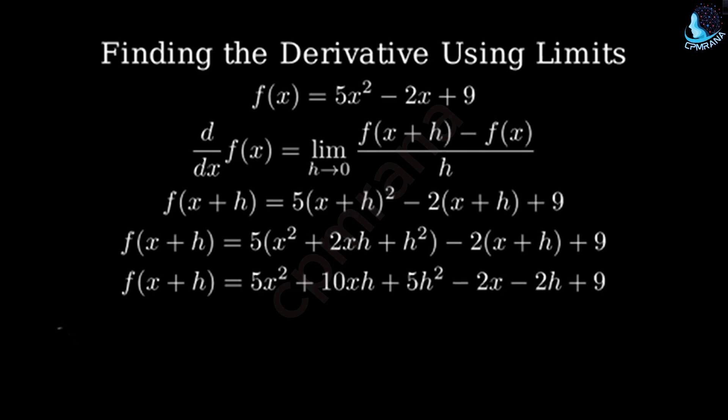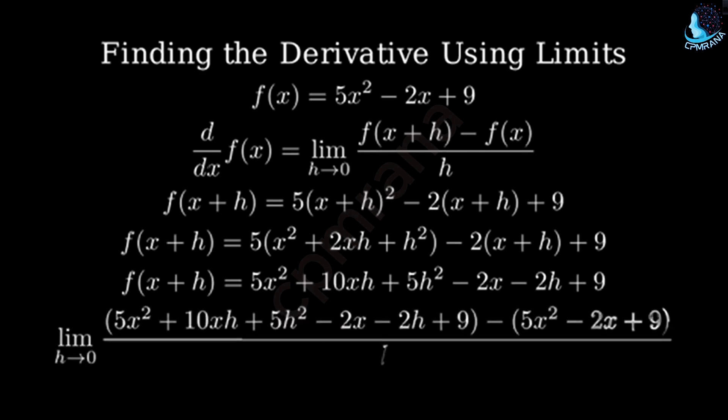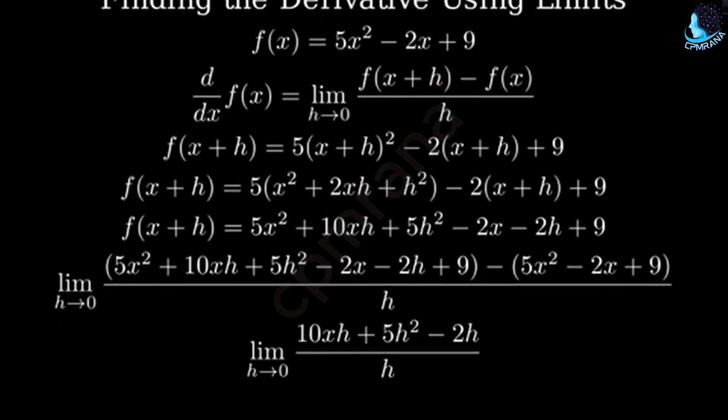Now, we can set up our limit. We subtract f of x, which is 5x squared minus 2x plus 9, and divide everything by h. Notice that the 5x squared terms cancel out, as do the negative 2x terms and the 9s.